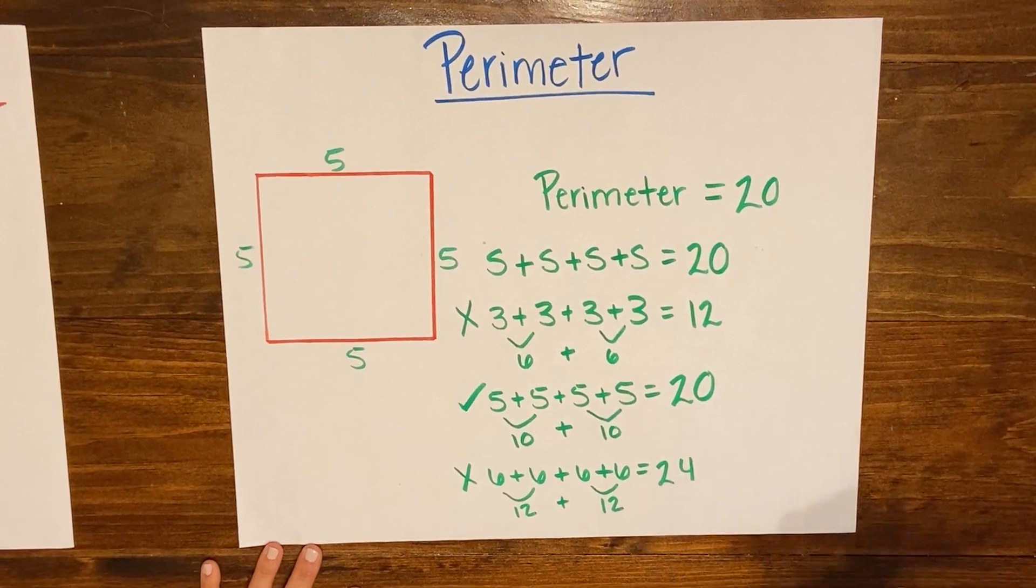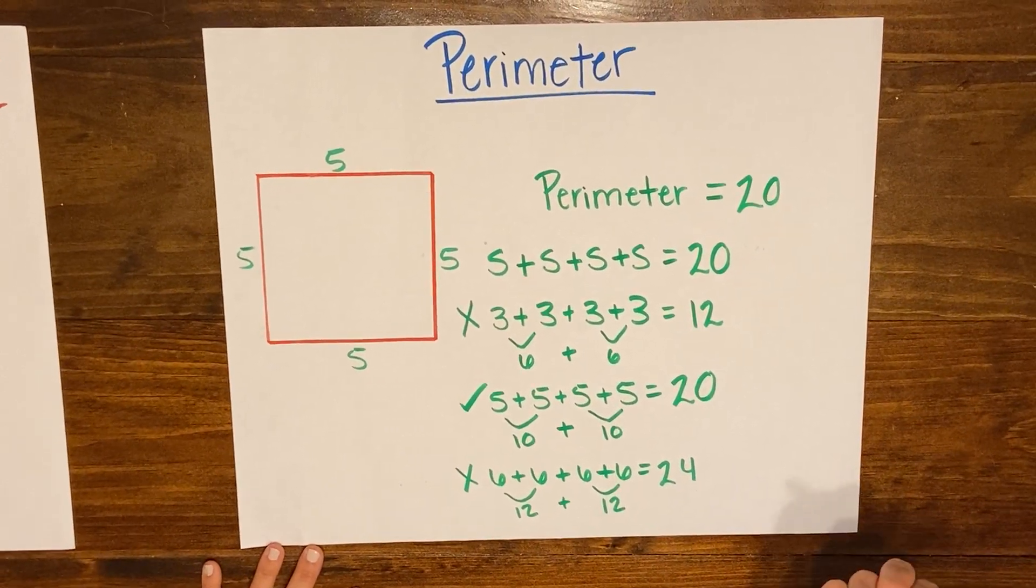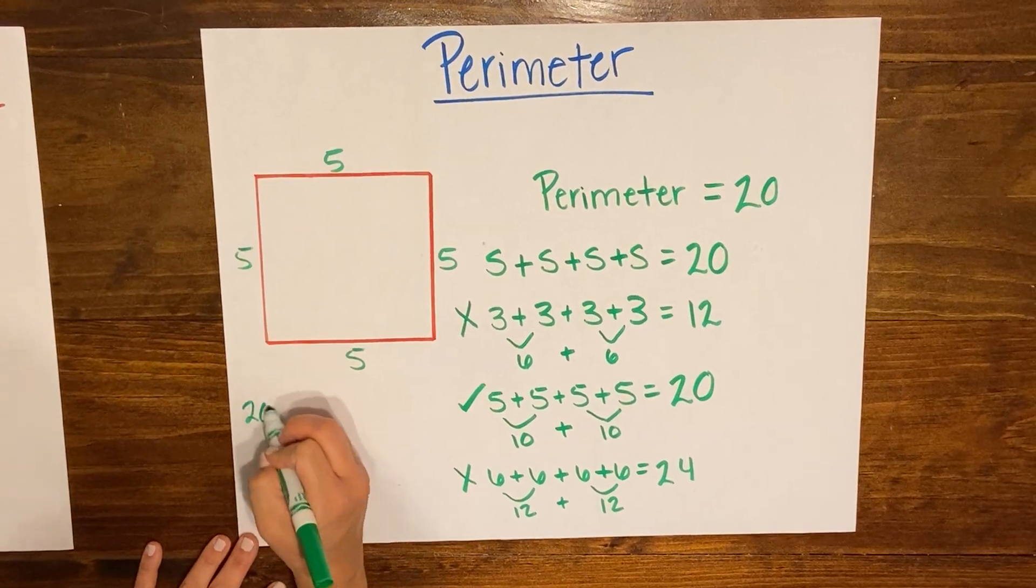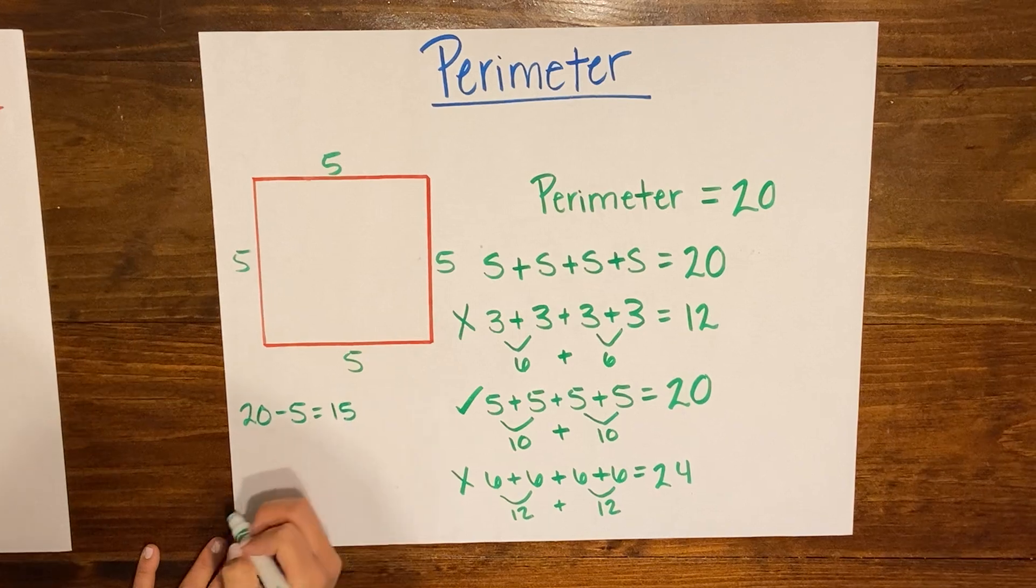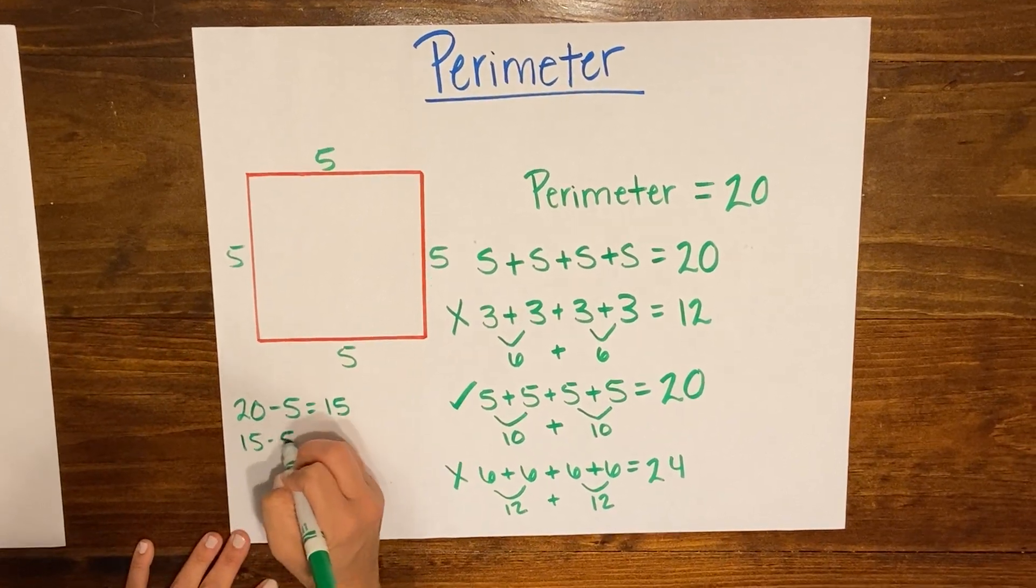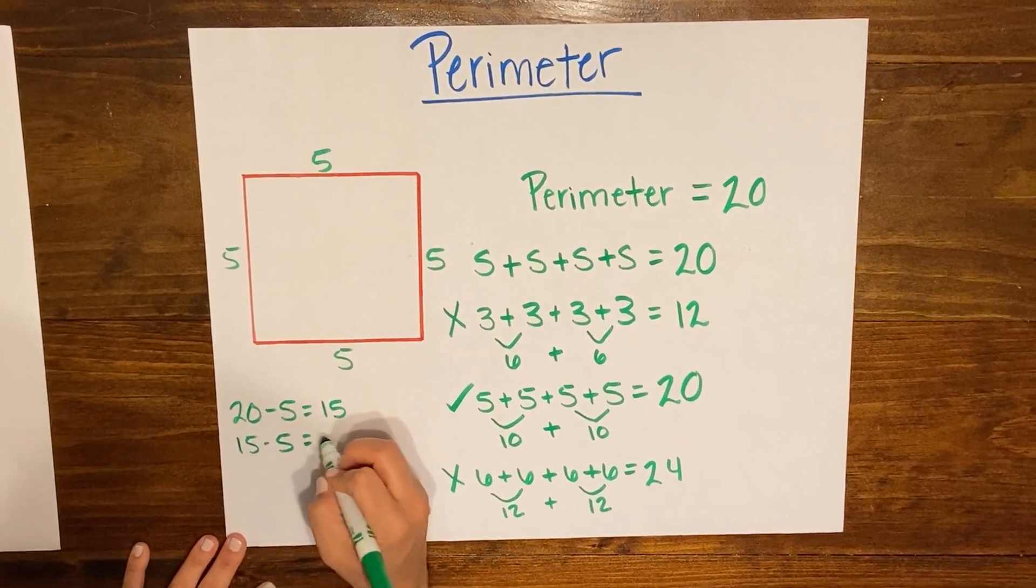Another way to think about this is that you need to take away the same number four times from 20 and end up with zero, and that's called repeated subtraction. So if I have 20 and I take away 5 I'm gonna get 15. Okay 15 subtract 5 is gonna give me 10.